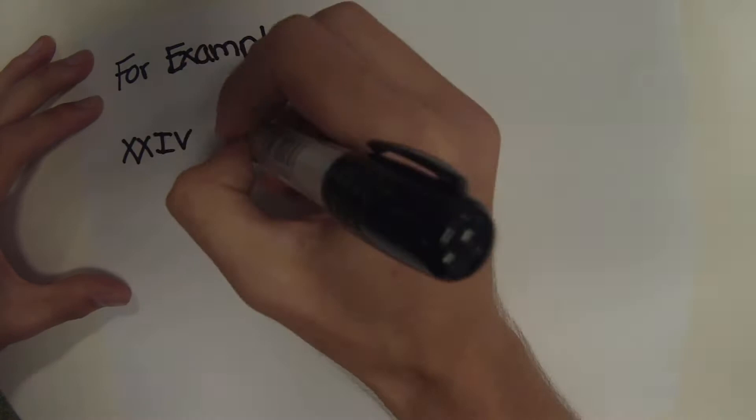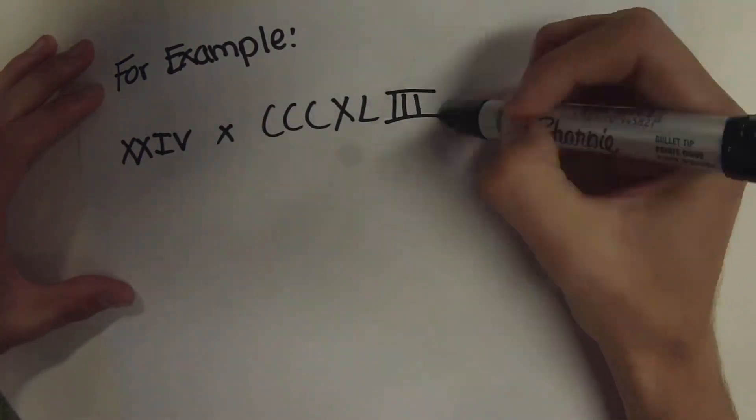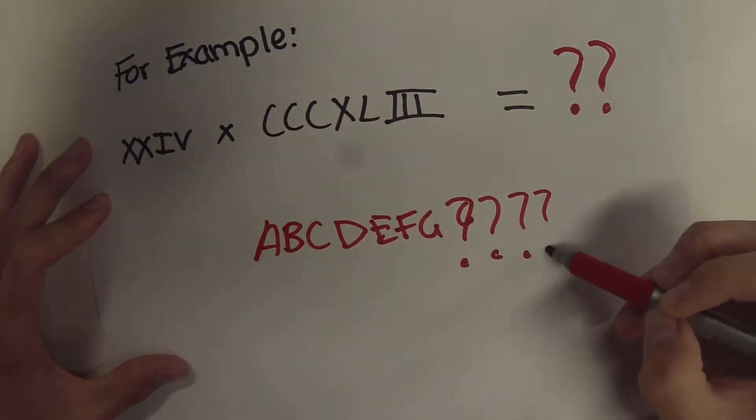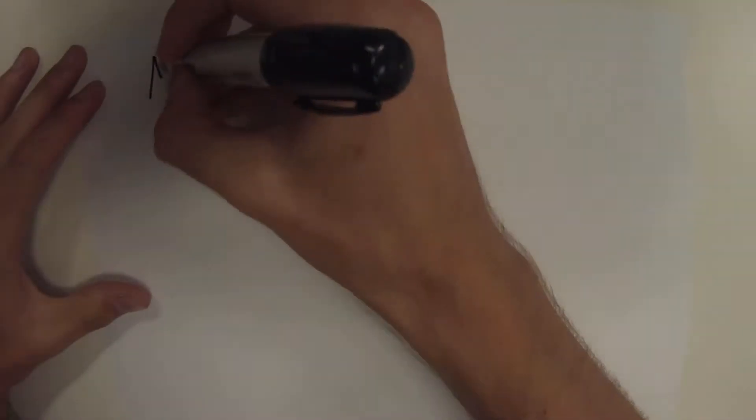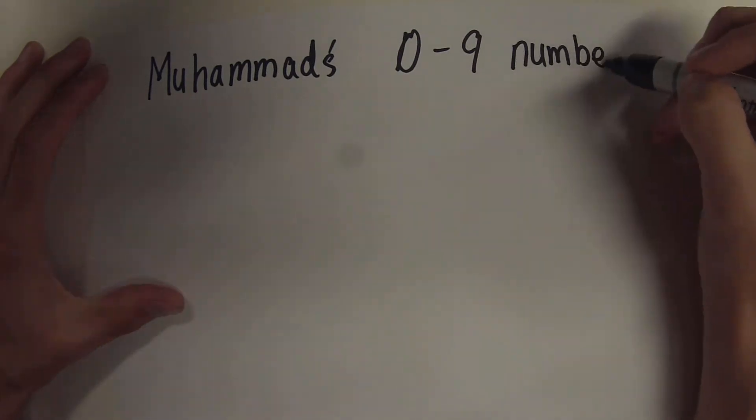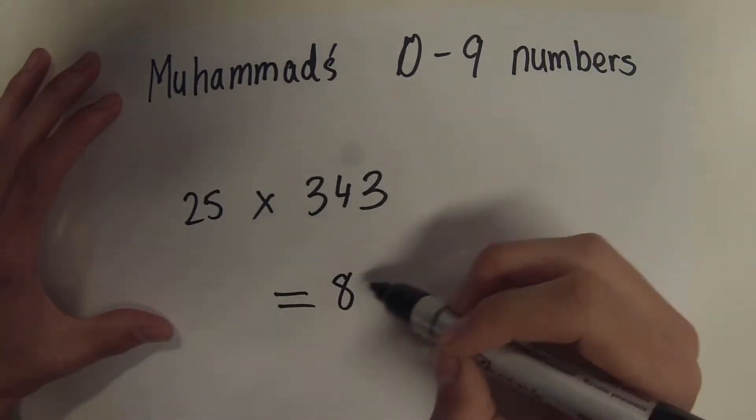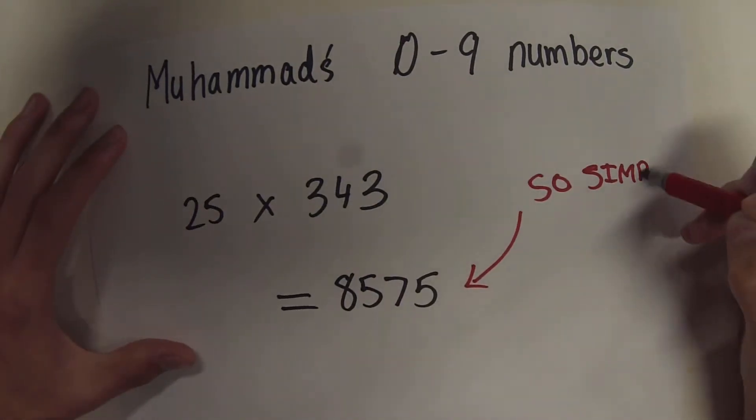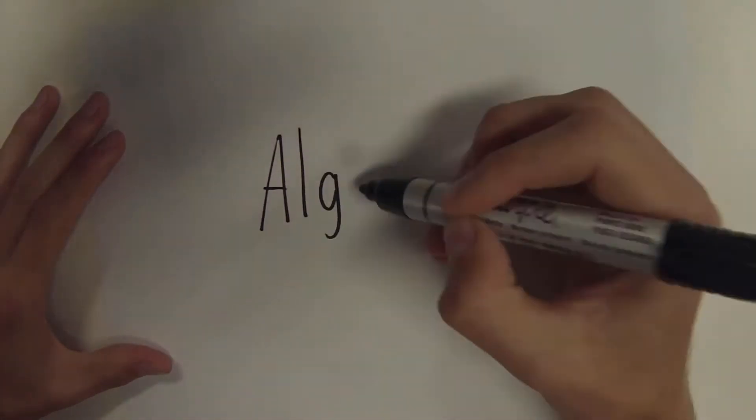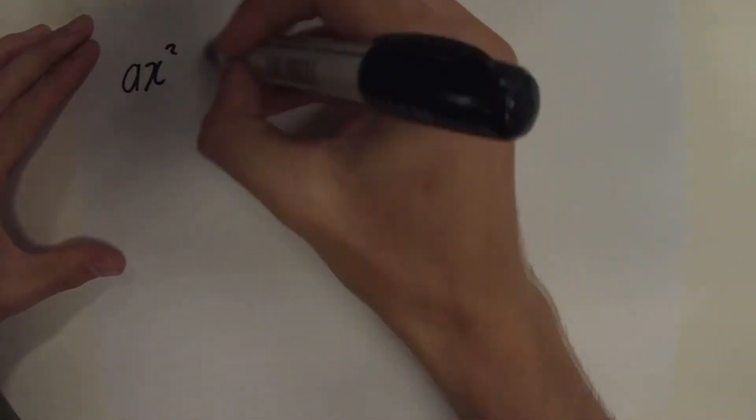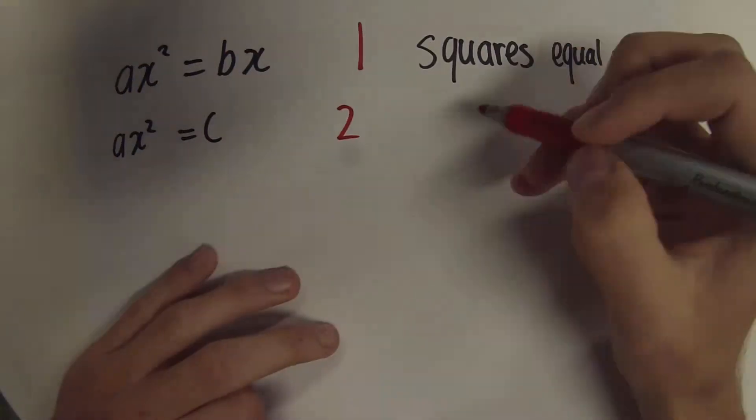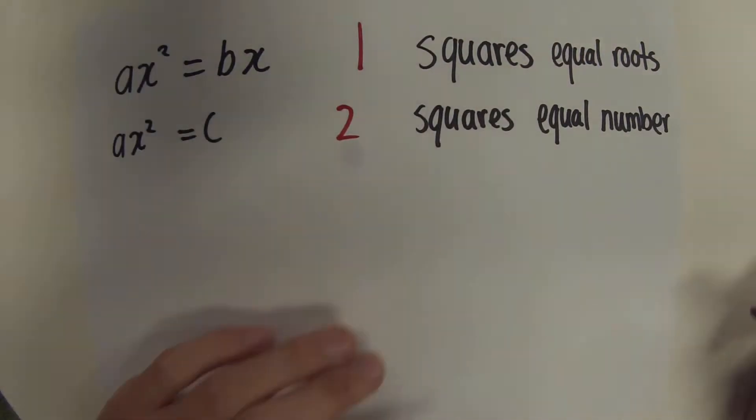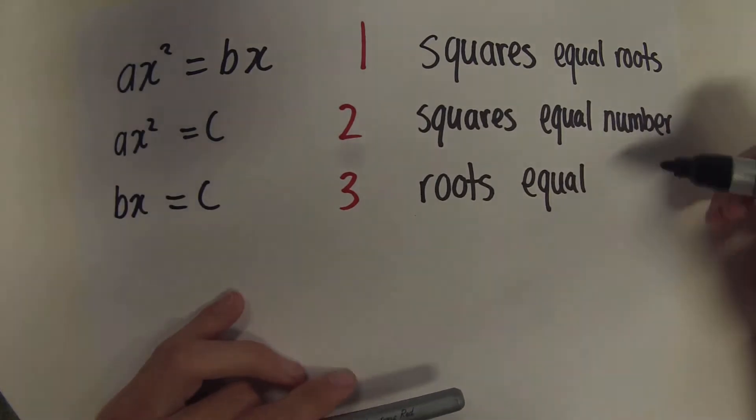Take the above problem in Roman numerals, XXIV by CCCXLIII. Apart from taking an eternity to write out, you also need to decipher what appears to be an extremely complex question, and that's just too much effort. However, with the Arabic 0-9 numeral system, this same problem can be written as 25 by 343, which equals 8575, which is so much simpler to solve compared to the Roman numerals used before.